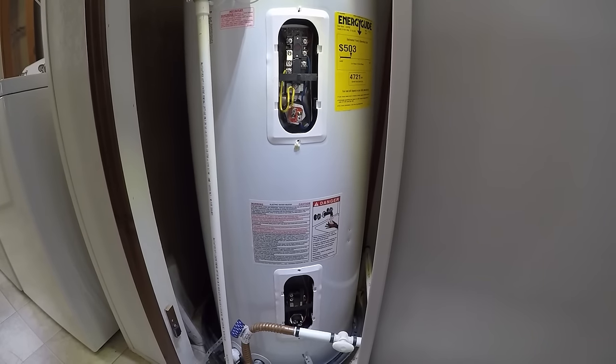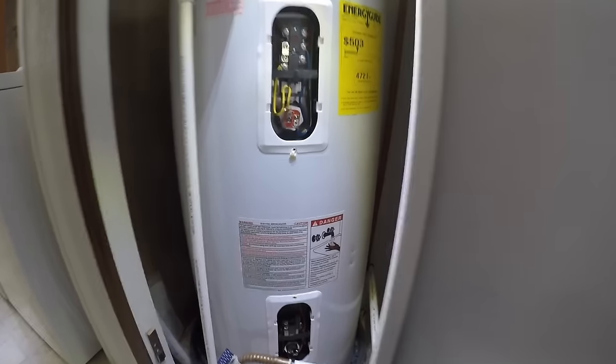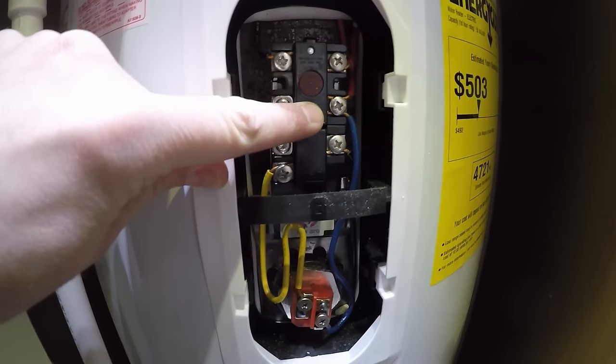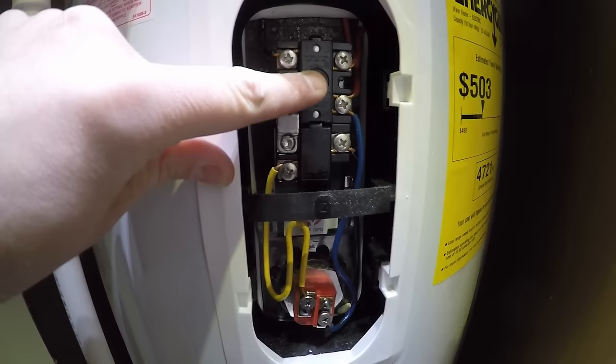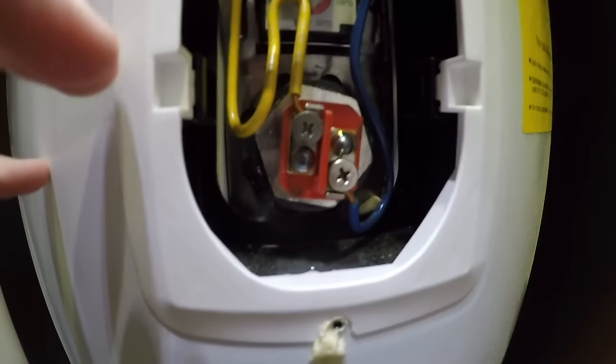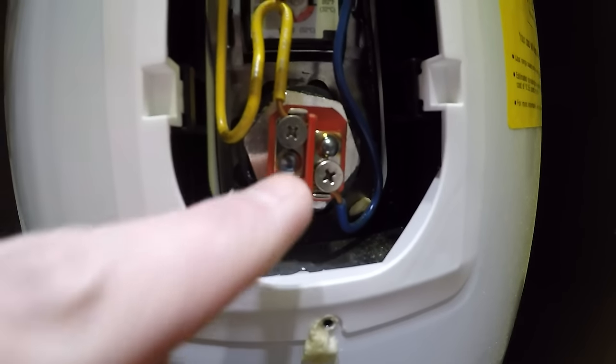Now I want to show you guys where the heating elements are located and what they look like. Let's start with this top section. This is actually the thermostat and it has a big red reset button on it. If you move down here, follow the yellow wire down and the blue wire, it connects to the upper heating element, which is located right here. It's like this red and orangish looking thing.